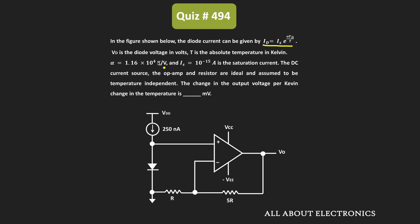Here we have been also given the values of α and the saturation current. Apart from that, all the components in the circuit are ideal. So for the given circuit, we have been asked to find the change in the output voltage for a 1 Kelvin change in temperature. That means if the temperature changes by 1 Kelvin, then what will be the change in the output voltage?